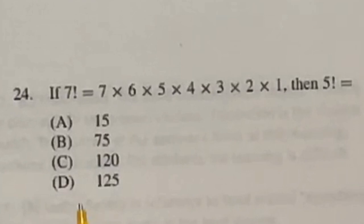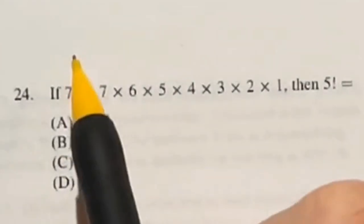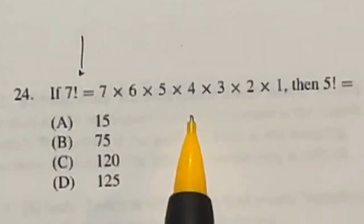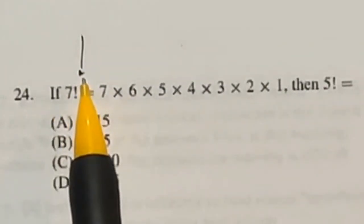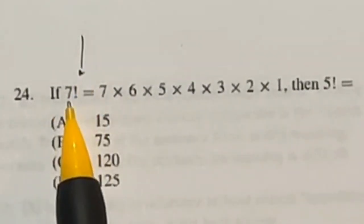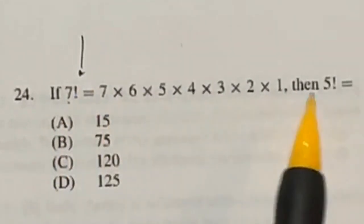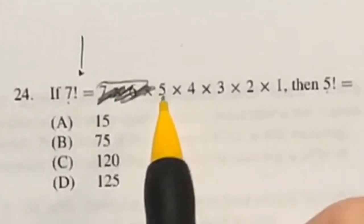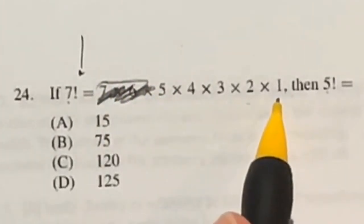So 24 is trying to show you what a factorial is, which is an exclamation point in mathematics, and then it's asking you to find one of these. So an exclamation in mathematics, factorial, means that you take that number and multiply it by every number underneath it down to 1. So if I'm looking for 5 factorial, I can just remove these two, and we multiply 5 by every number under it until 1.